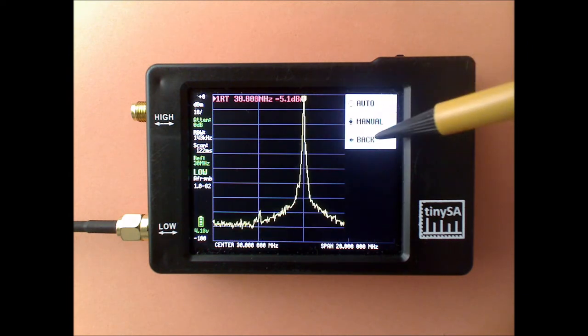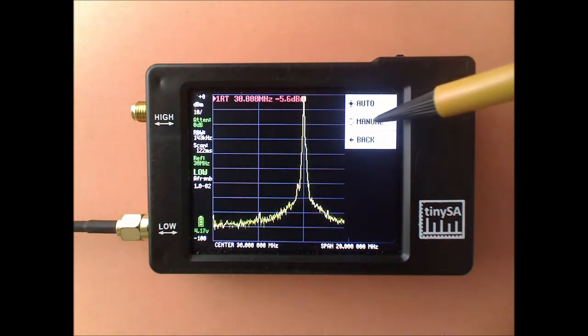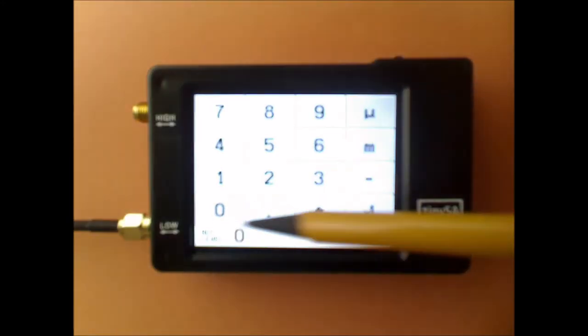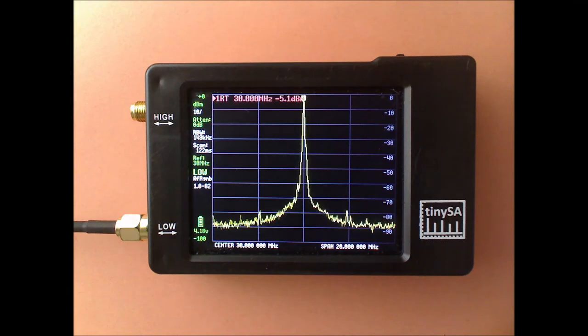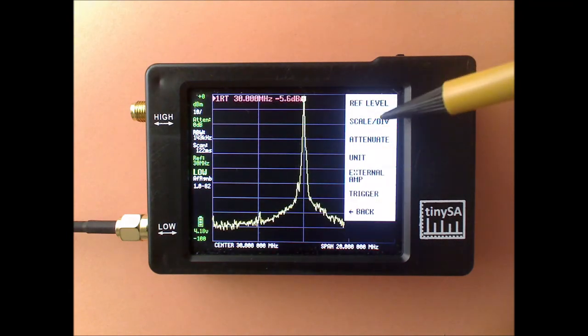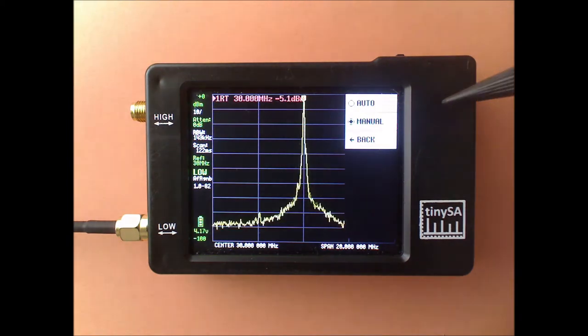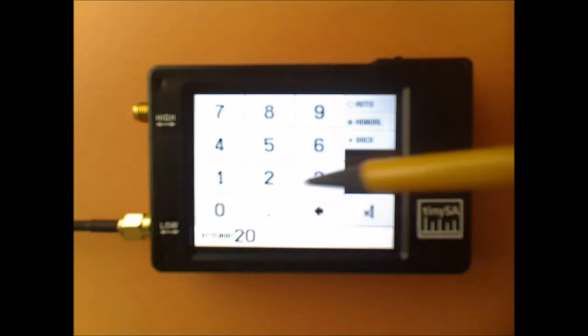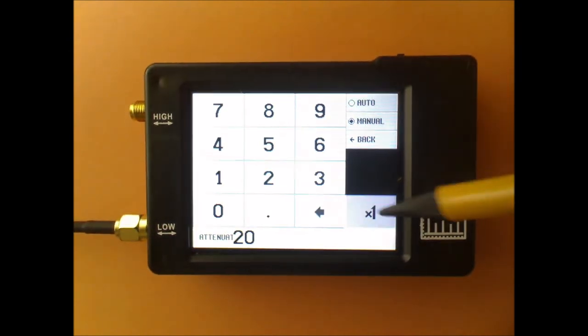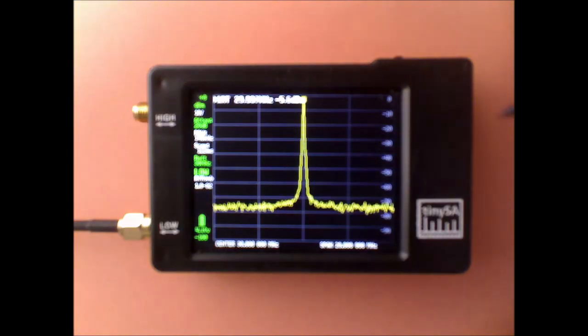Now if I set the ref level to manual 0 dB and I switch between 0 dB attenuation like it is set now and I set it to 20 dB attenuation as it was when it was automatic, you will notice that the noise floor moves up.